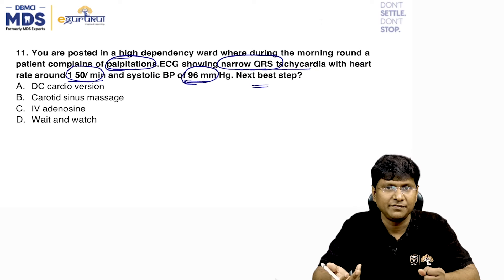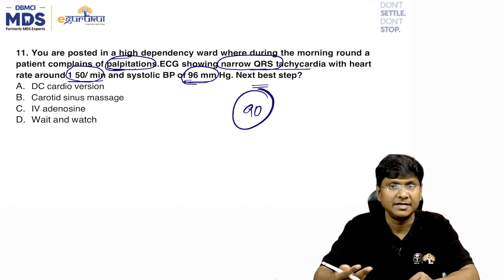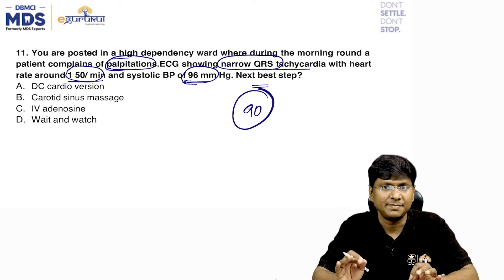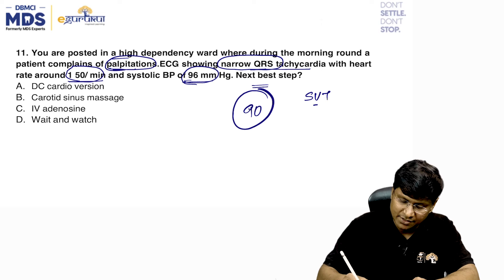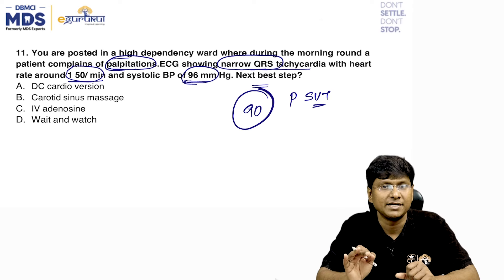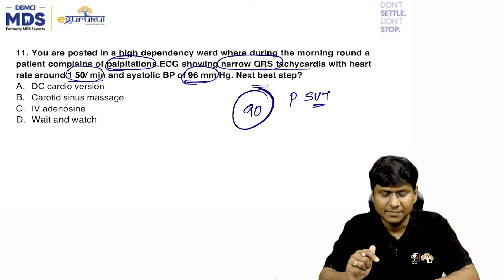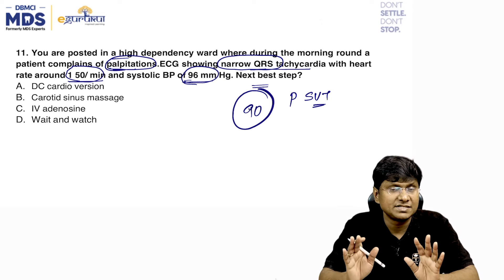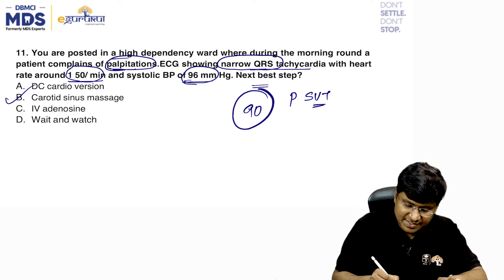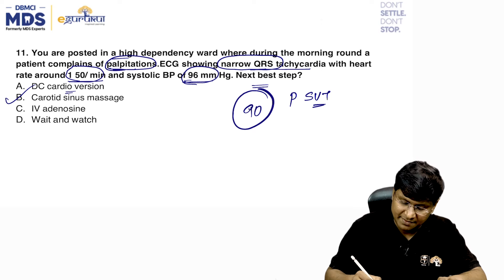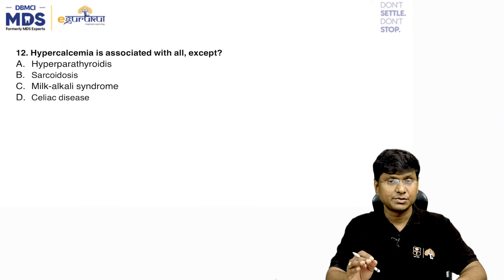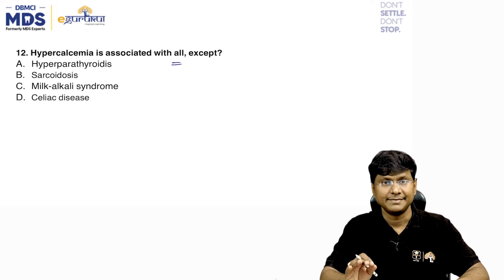The lower limit of systolic blood pressure is about 90 mmHg, so 96 mmHg is within the lower range of normal — the patient is more or less hemodynamically stable. In paroxysmal SVT with a hemodynamically stable patient, the next best step is carotid sinus massage. DC cardioversion would be indicated if the patient were hemodynamically unstable, for example with blood pressure of 86 mmHg.